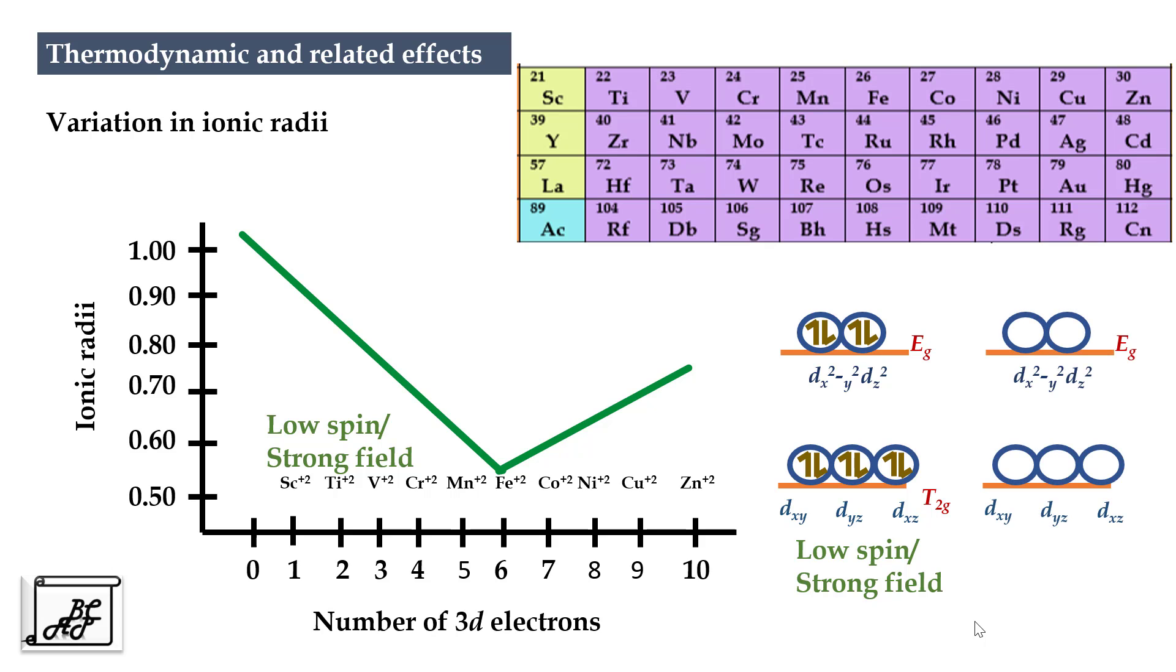In case of weak ligand field, the first three electrons go into the T2g orbital. Therefore the variation is same as that of strong ligand field. But the fourth electron goes into the Eg orbital which causes repulsion. The ionic radii increases from chromium to manganese. Now all the five orbitals are singly occupied. The sixth, seventh, and eighth electron gets occupied into the lower lying T2g orbital. The ionic radii decreases from Fe to cobalt to nickel. After this, the ninth and tenth electron goes into the Eg orbital. The size increases as in case of strong ligand field.